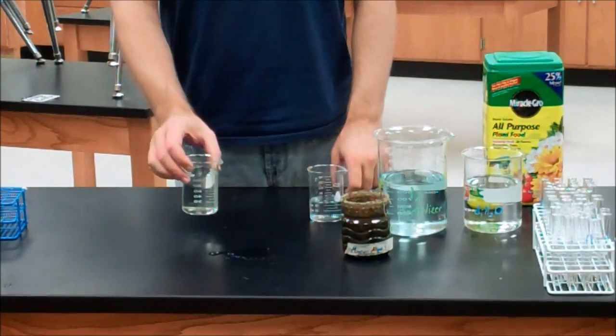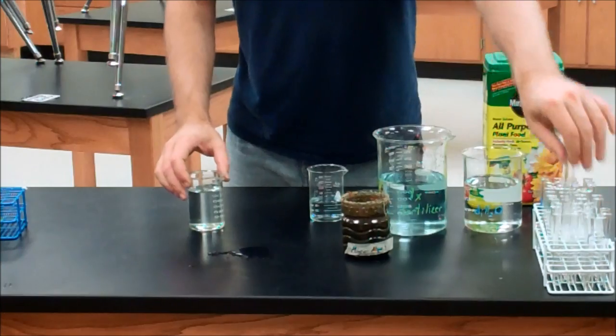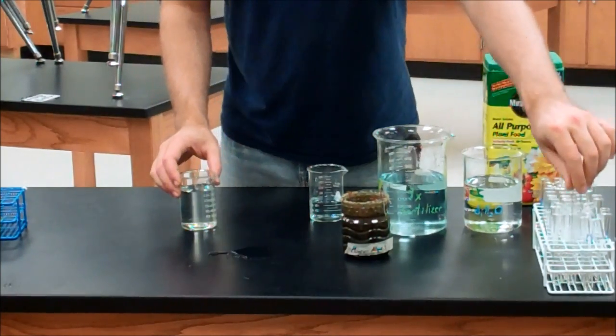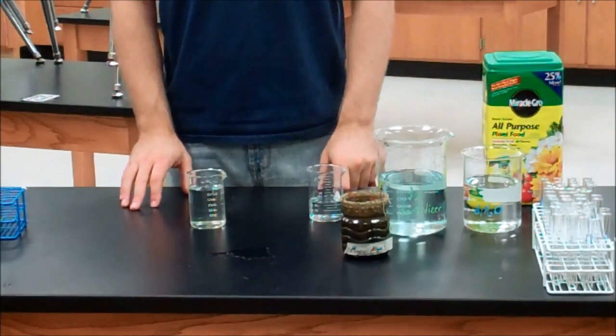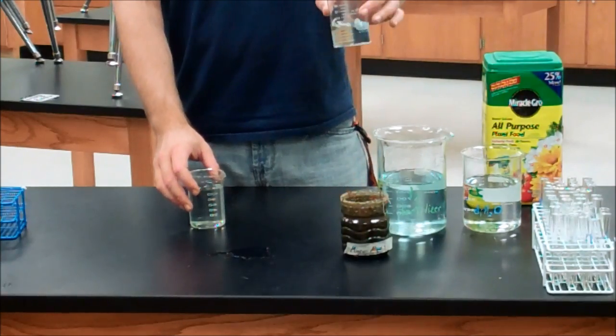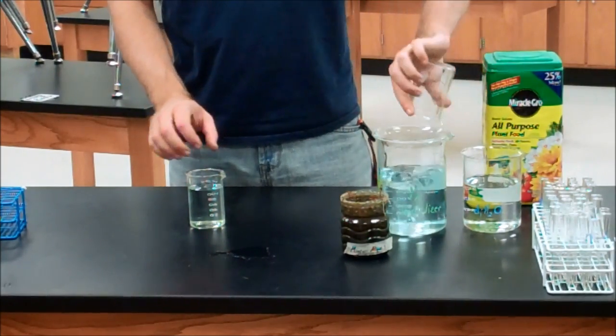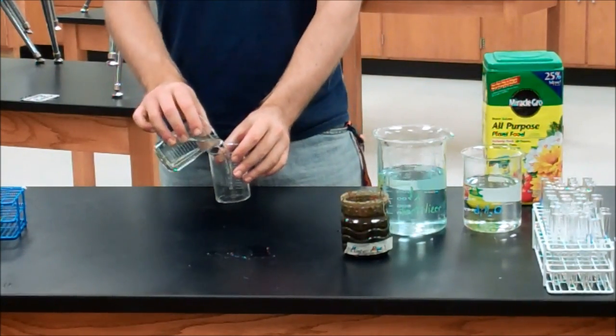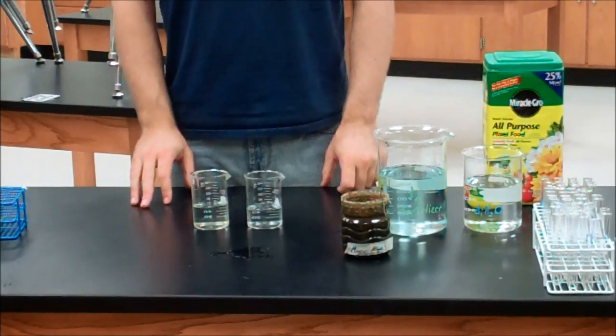From here you can either take another sample into another test tube and inoculate and have a 0.5X fertilizer trial. Or you can continue to dump this out and do yet another dilution and keep going.